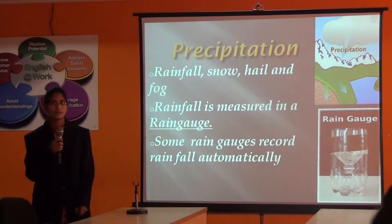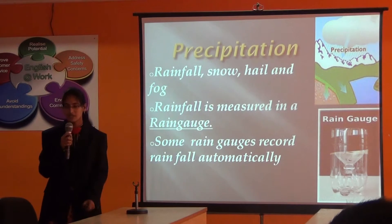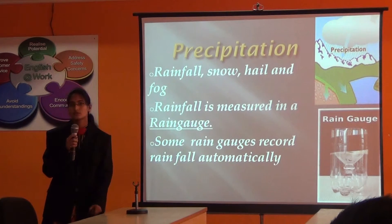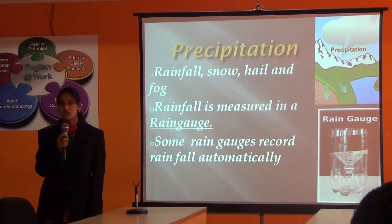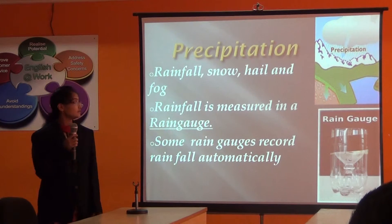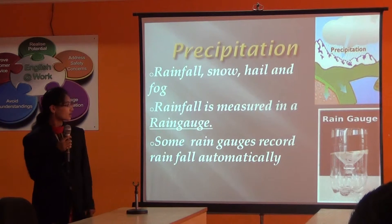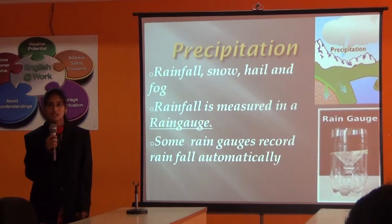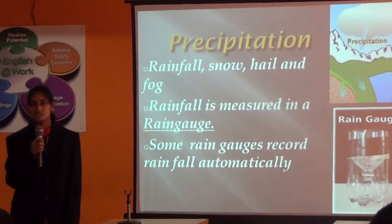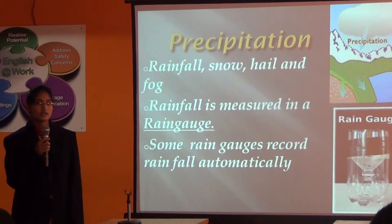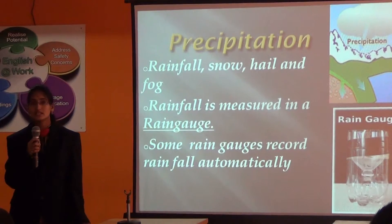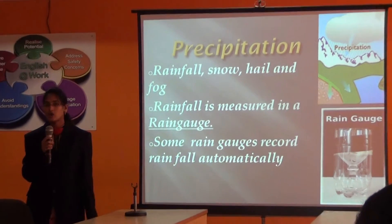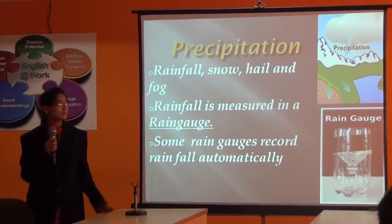Precipitation is due to snow, rainfall, hail and fog. Rainfall is measured by using a rain gauge. Some rain gauges record rainfall automatically.